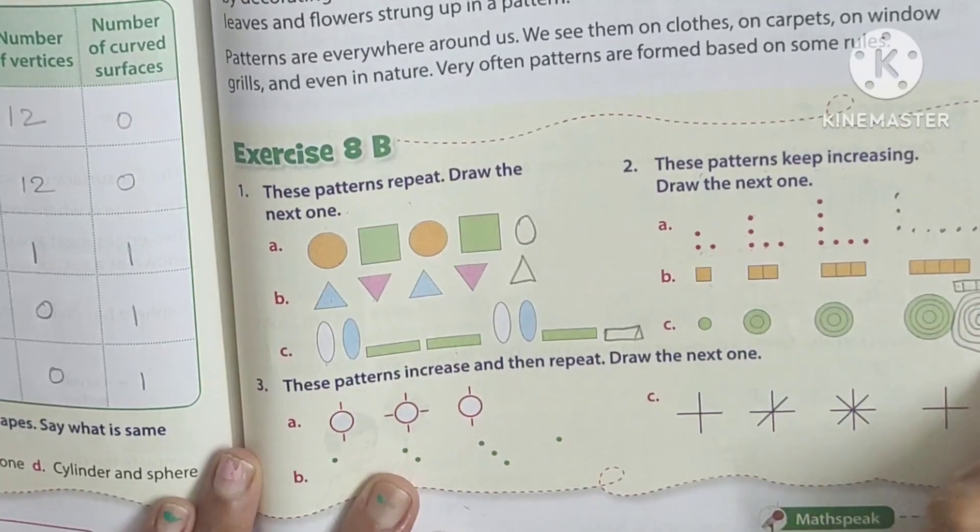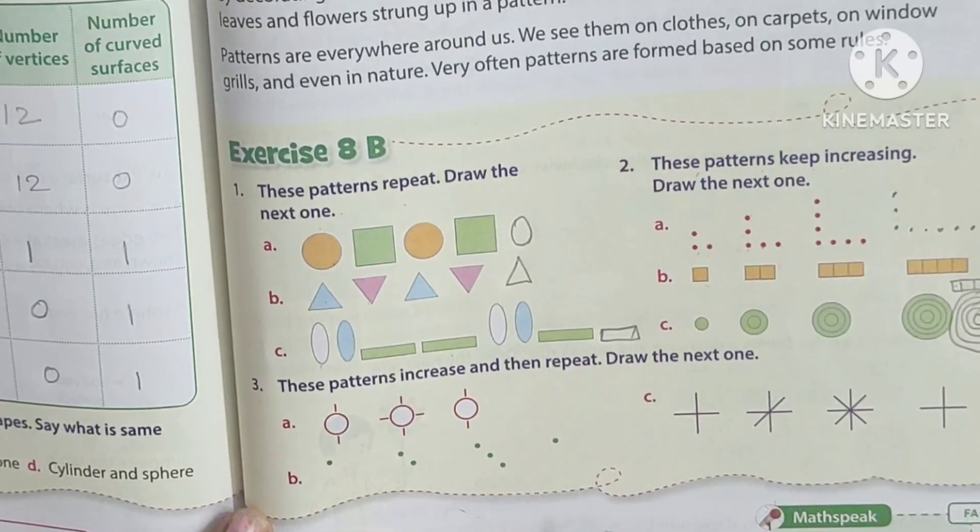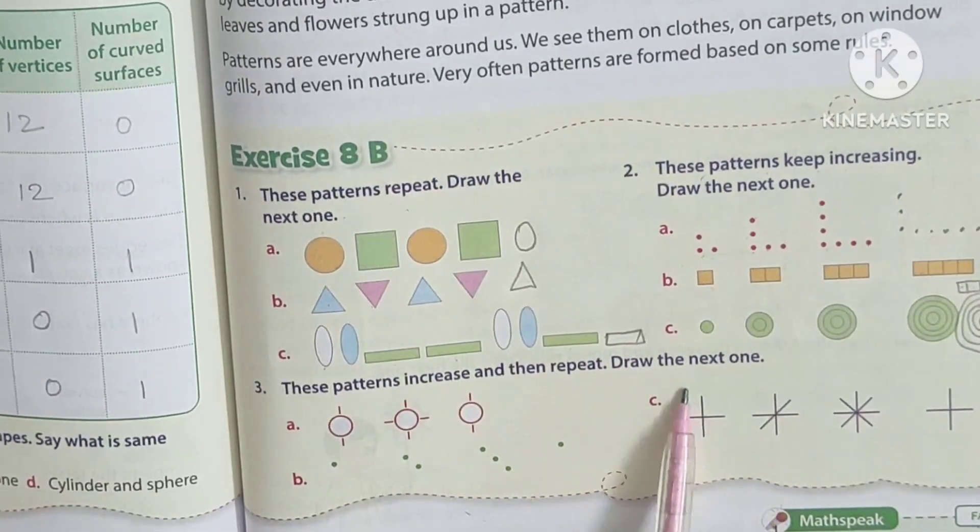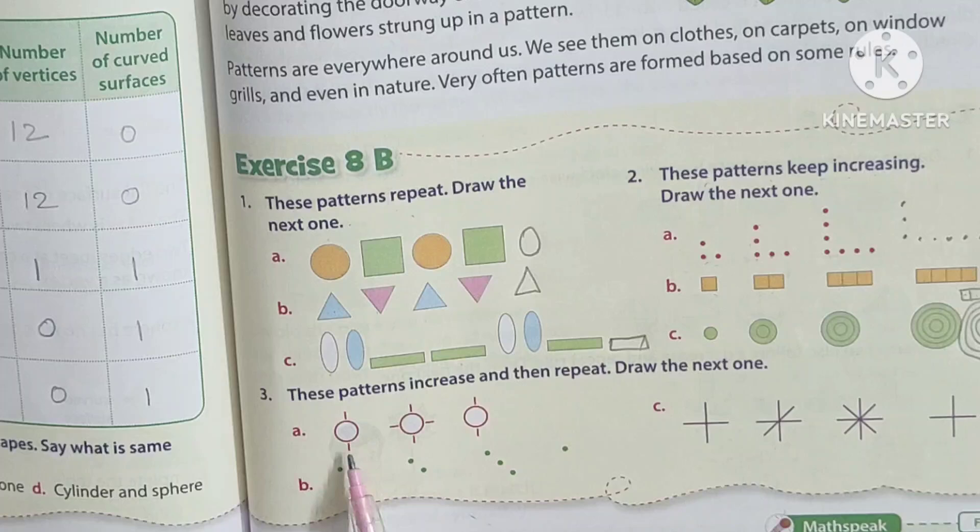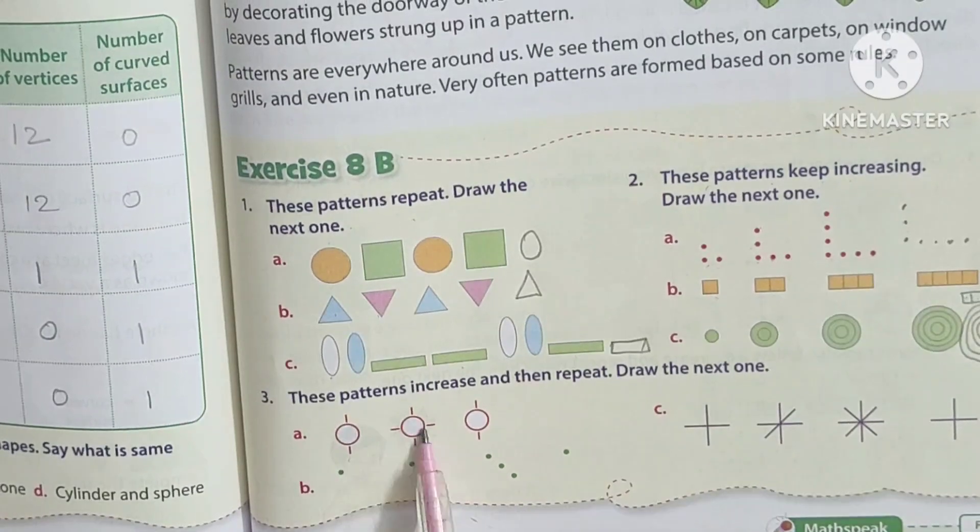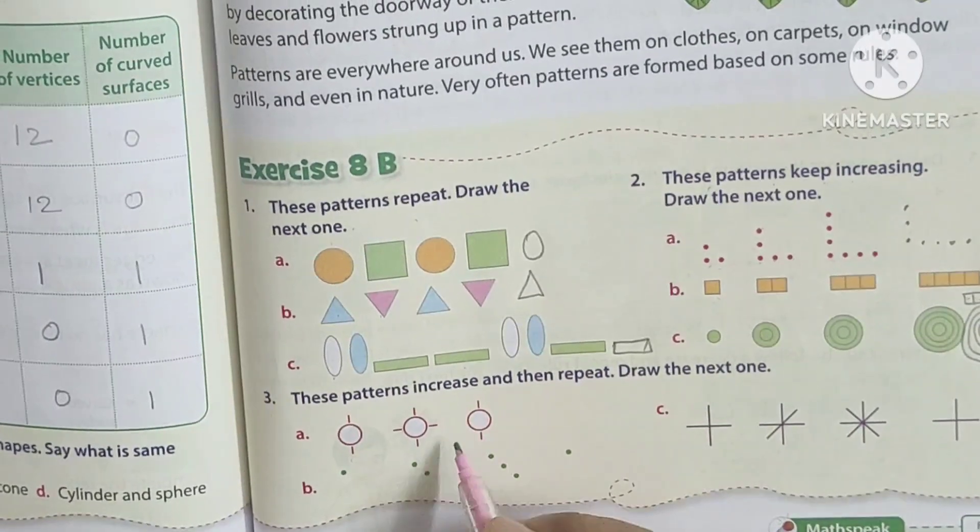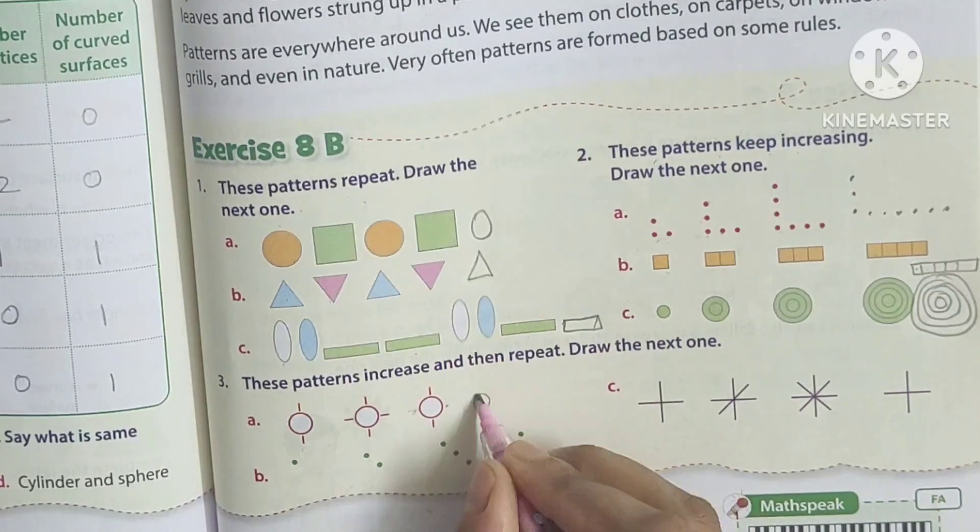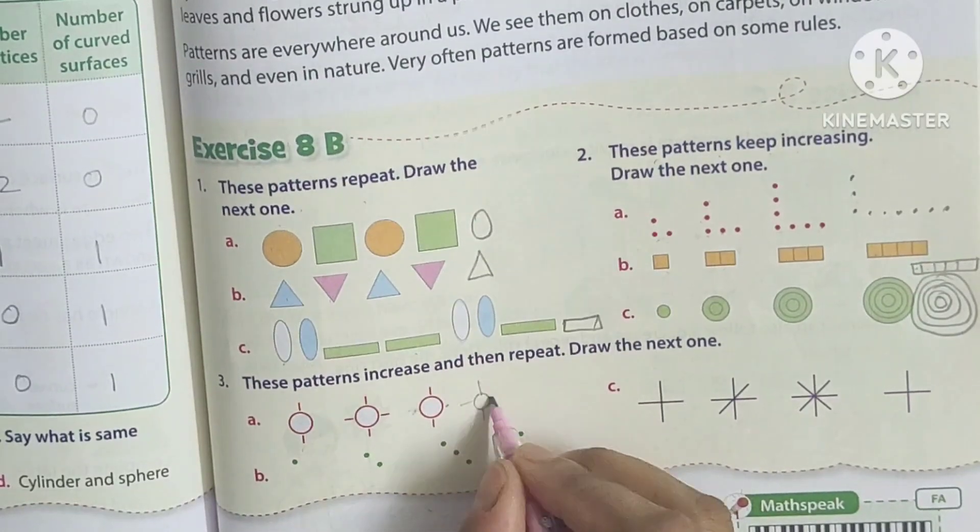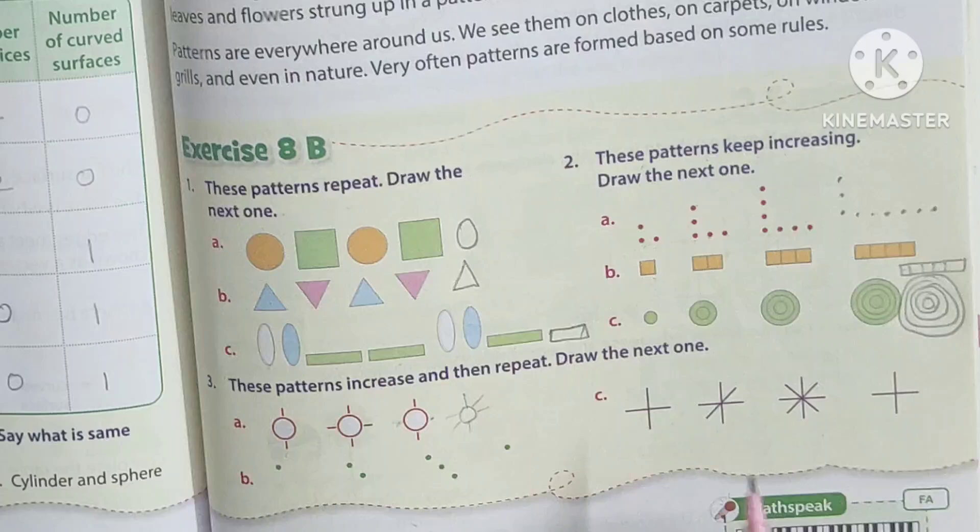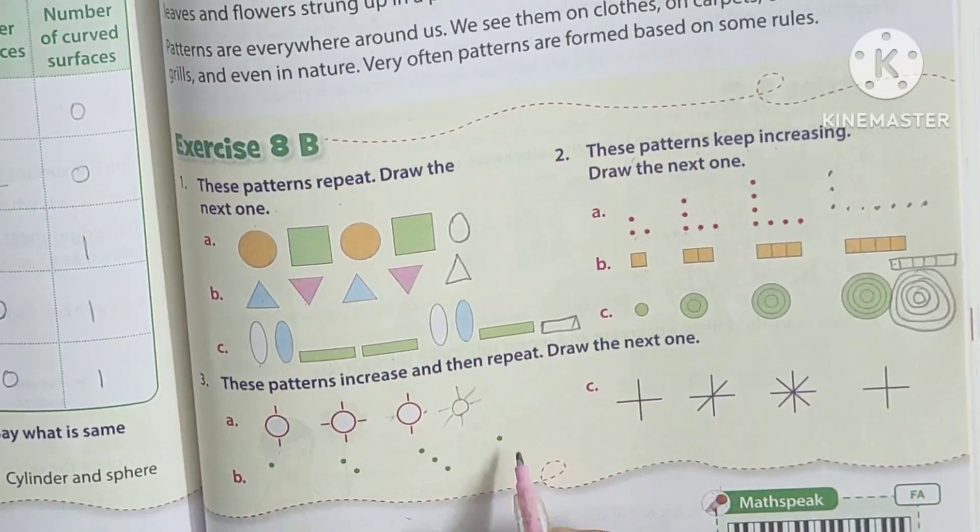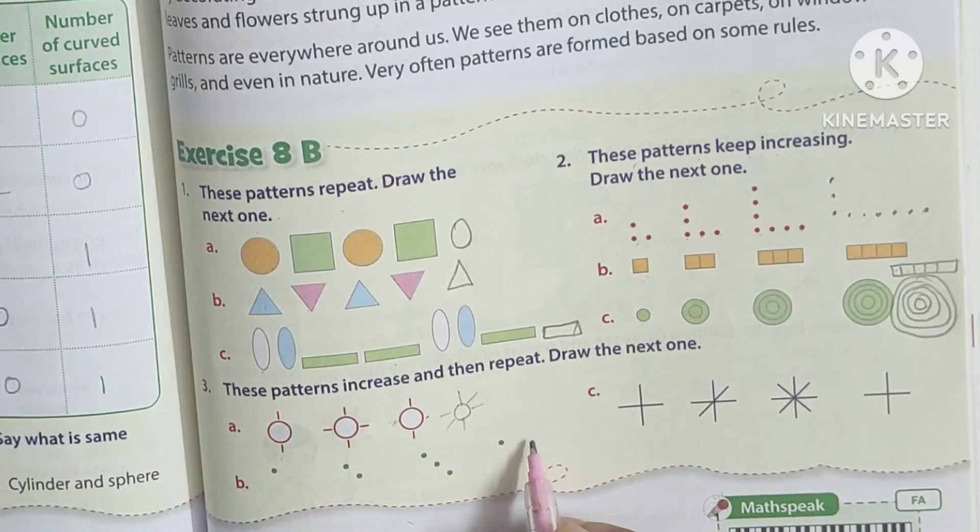These patterns increase and then repeat, draw the next one. One two three four six six, six six six seven, seven.